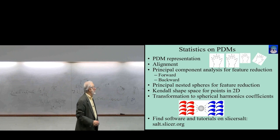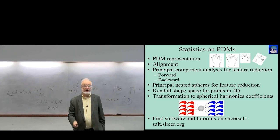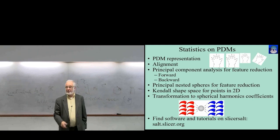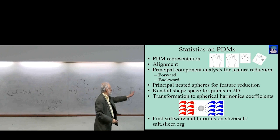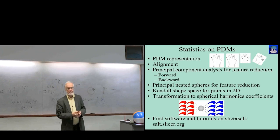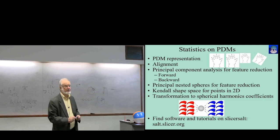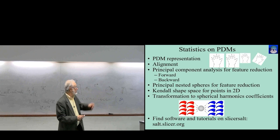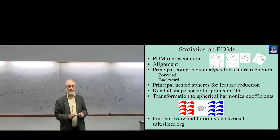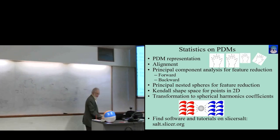After discussing principal nested spheres, we're going to talk about a special shape space for point distributions that Kendall invented in 2D, then spherical harmonics derived from points. All the things I'm talking about — principal component analysis, principal nested spheres, spherical harmonics and statistics on them — are in the SALT catalog of programs, found online at salt.slicer.org, including nice tutorials.